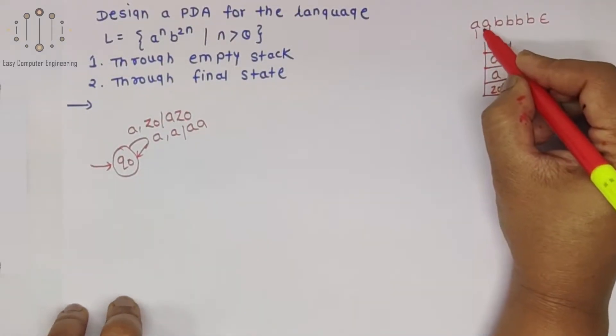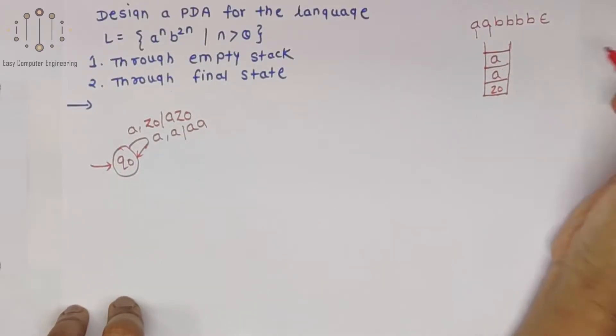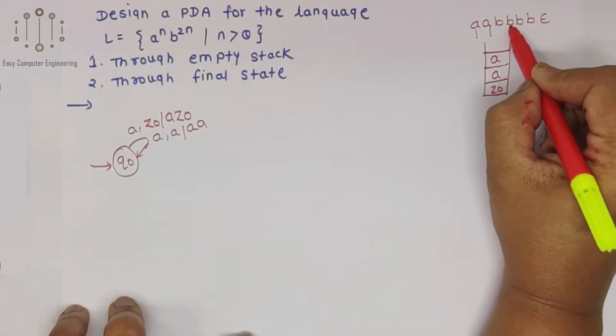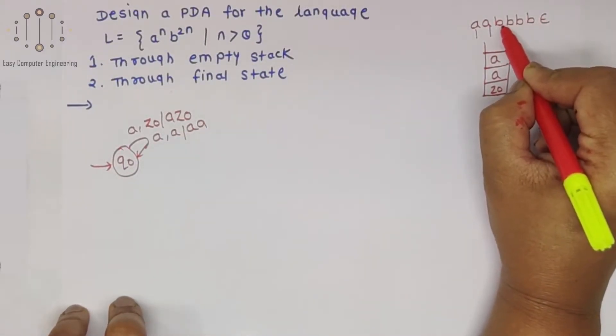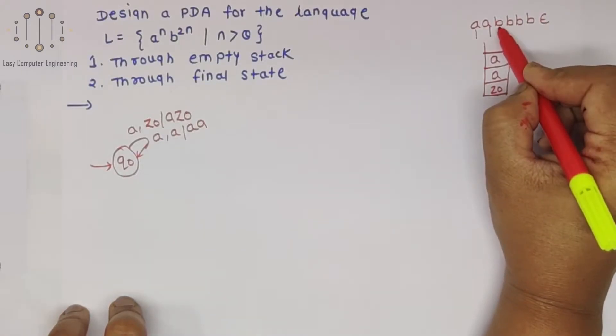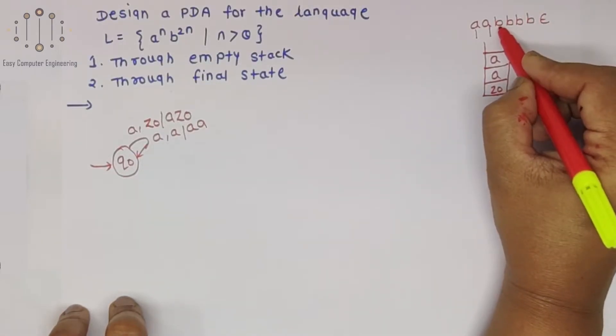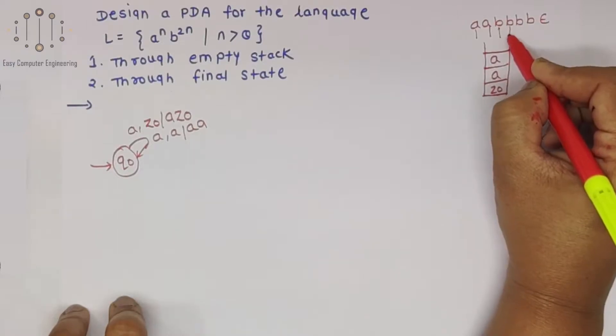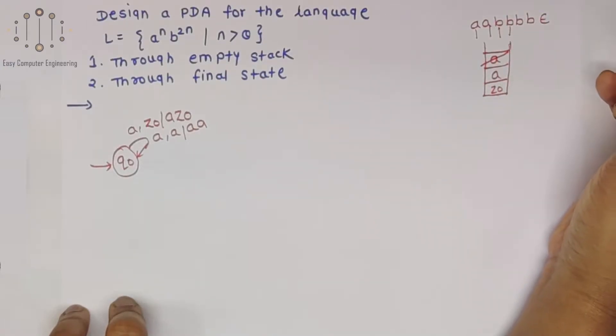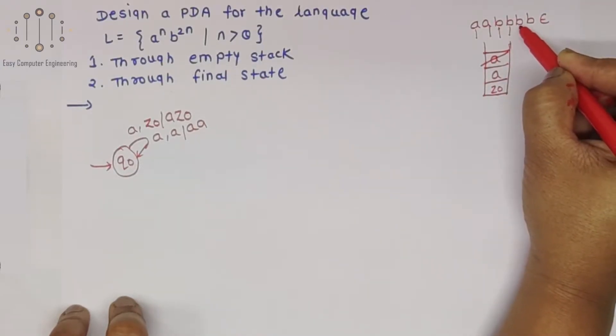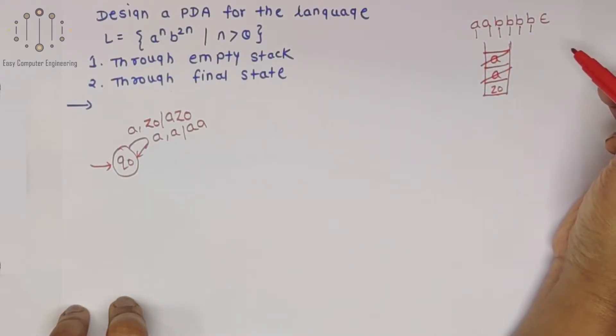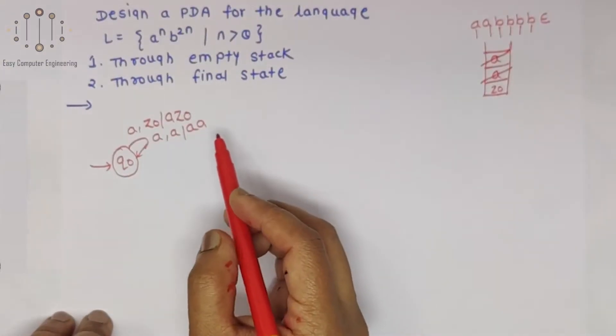Whatever A count, we will push into the stack. Now for B, this count should be double. For first B we will just read B, and for second B we will pop A. For next epsilon, if empty stack, we will pop this Z0 also.